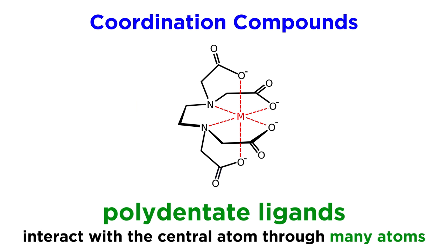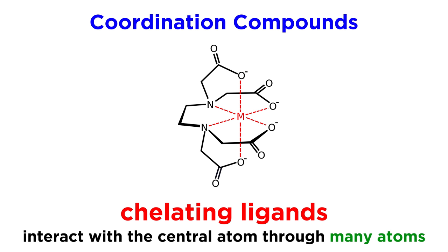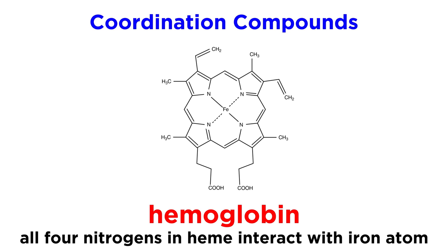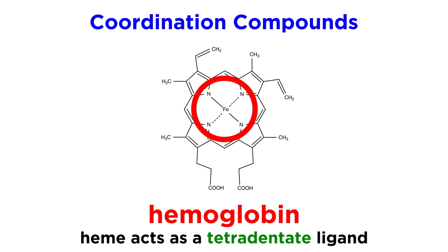There can even be polydentate ligands, where interaction with the metal atom occurs in many places. These can sometimes be called chelating ligands. Hemoglobin is such a ligand, because all four nitrogen atoms in the heme are coordinated to the iron atom. So technically this is a tetradentate ligand.